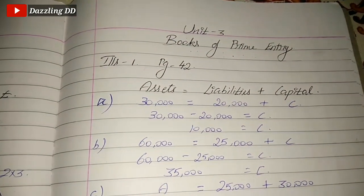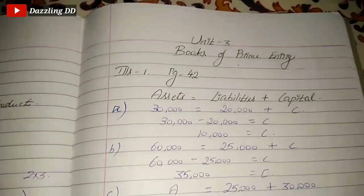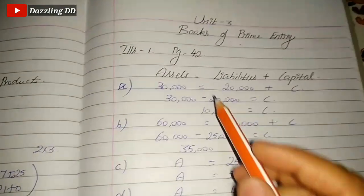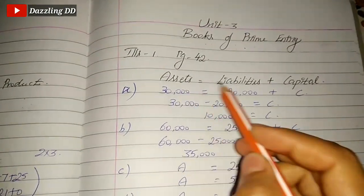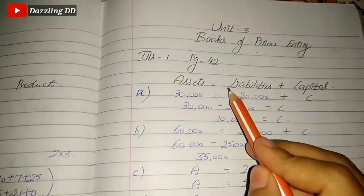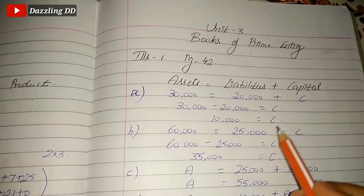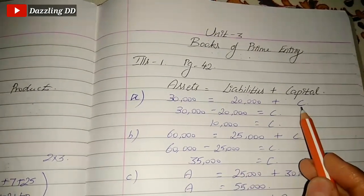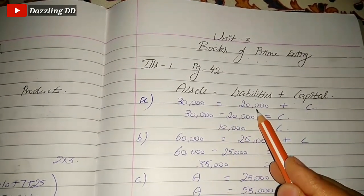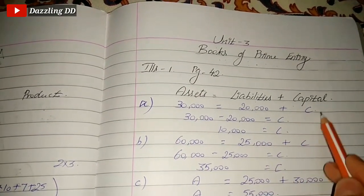We will see Illustration 1 in Unit 3. This page is 42. Asset is equal to Liabilities plus Capital. This is a formula that you will need to know. In this case, we will see the capital. Assets and Liabilities are already given.